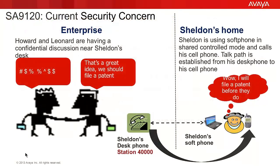As you can see in the graphic, we have three parties involved. Howard and Leonard are discussing a confidential matter near Sheldon's desk. Sheldon, our villain in this story, has dialed into his desk extension using his cell phone and has answered the call on his IP softphone. Sheldon's phone being in shared control mode has enabled the speakerphone with the microphone enabled as well. Sheldon is now monitoring what is occurring around his telephone and has learned the confidential information being discussed. He appears to have made a decision to file a patent before Leonard and Howard. SA 9120 will be used to overcome this problem.